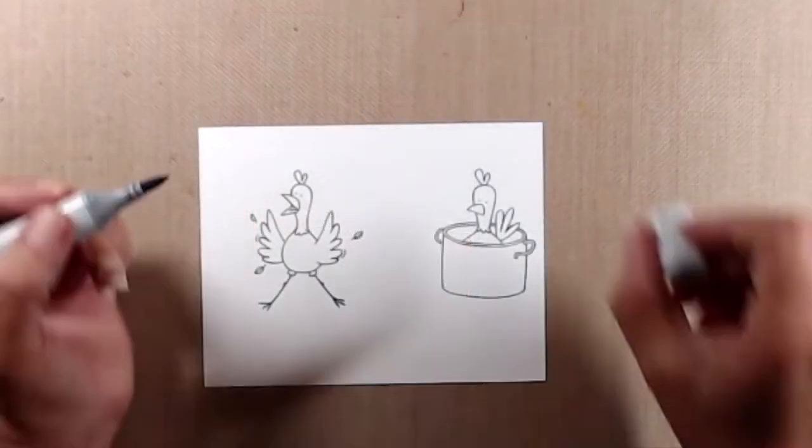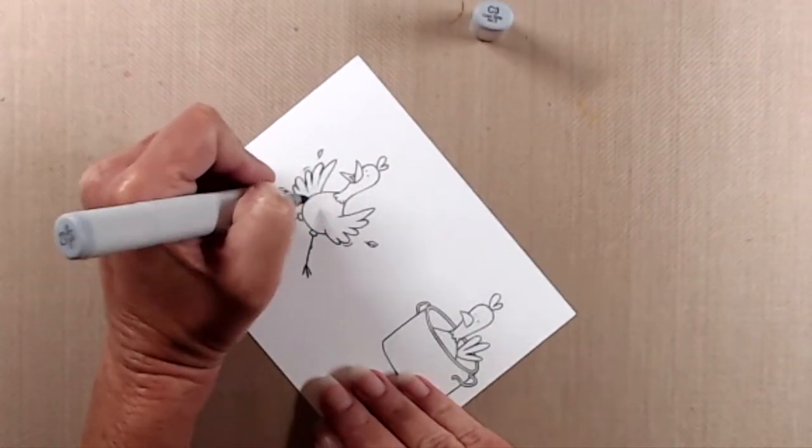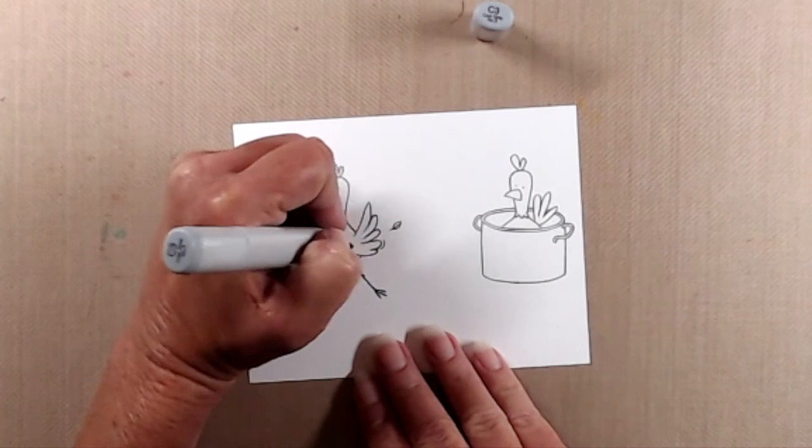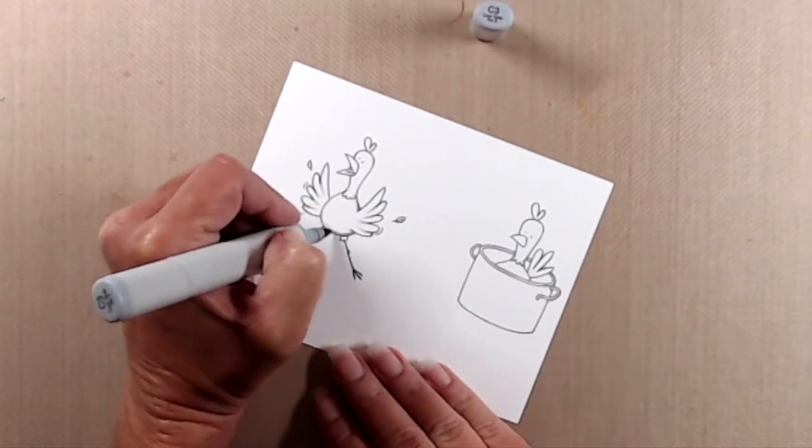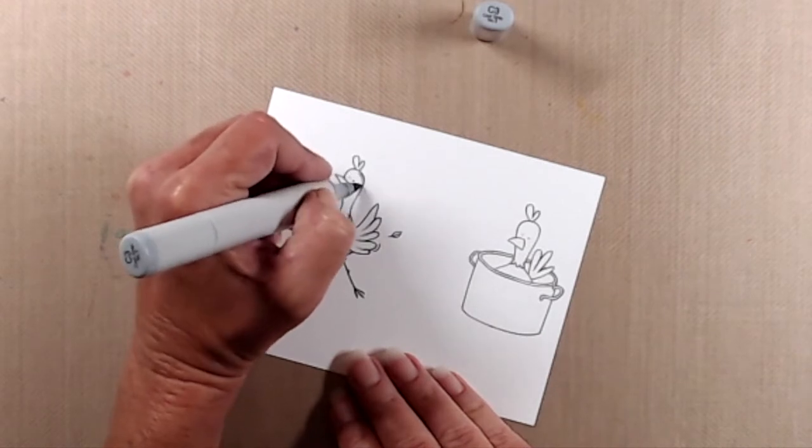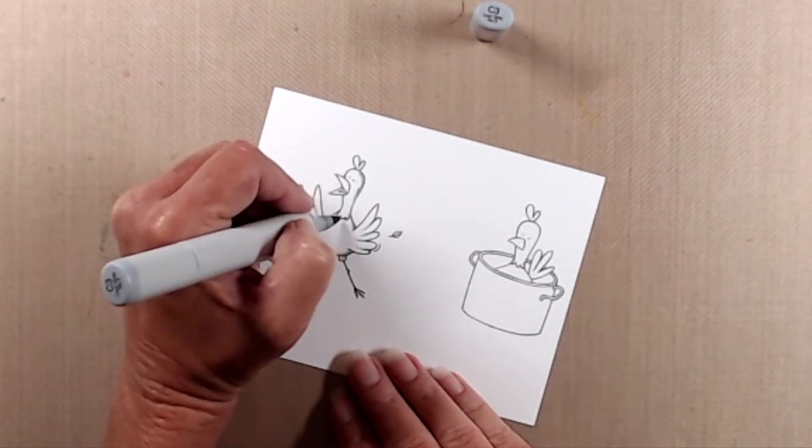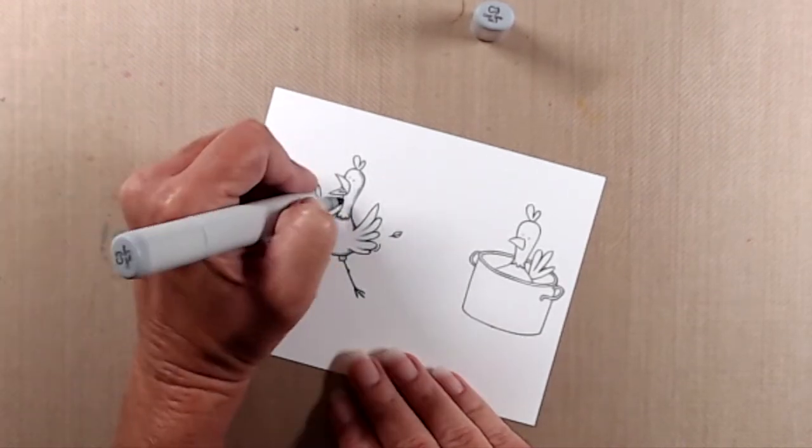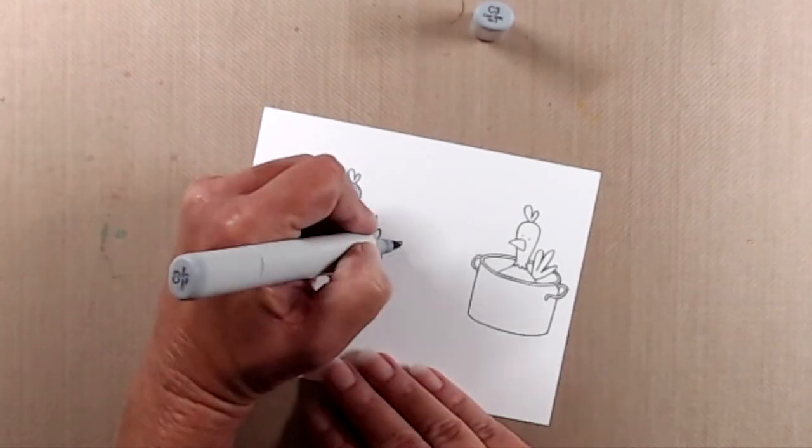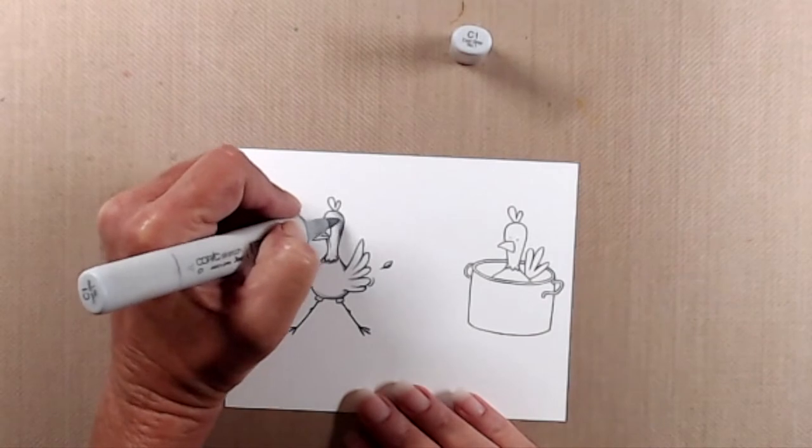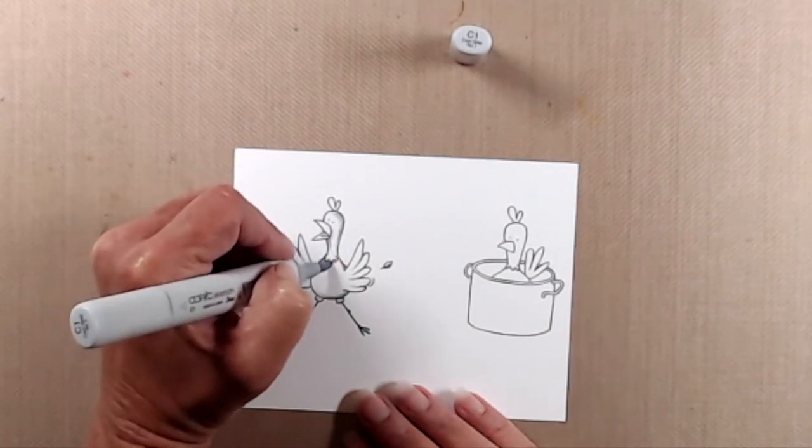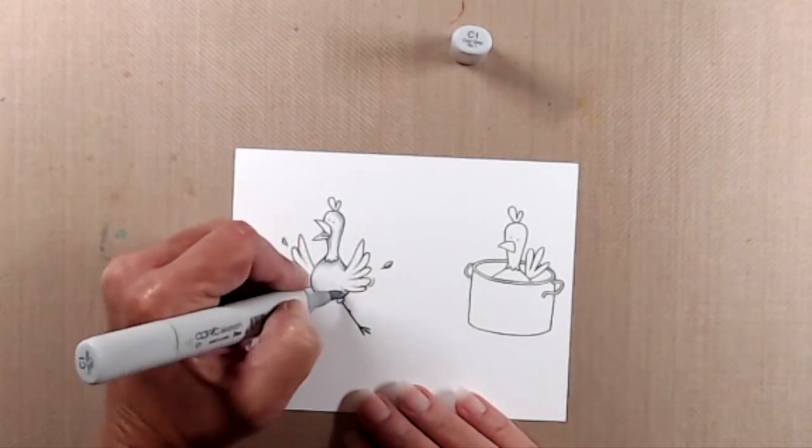For all the chickens I used the same colors. I tried to keep the number of markers to a minimum, which really didn't work because I ended up using a whole bunch. But that's neither here nor there. For the excited chicken I used C3, C1, my colorless blender, Y38, Y17, R27, and R17.